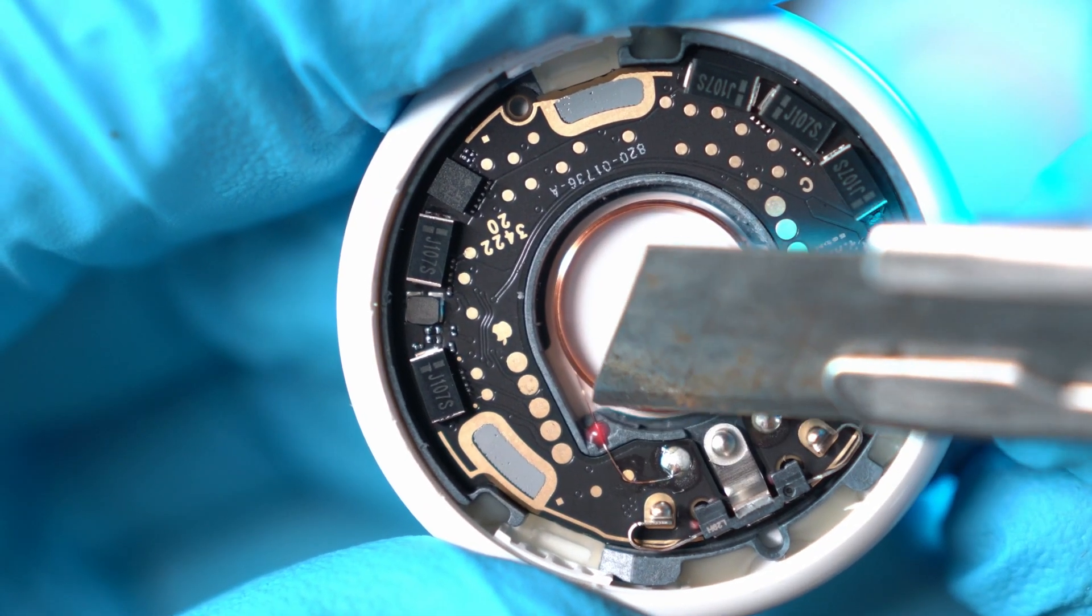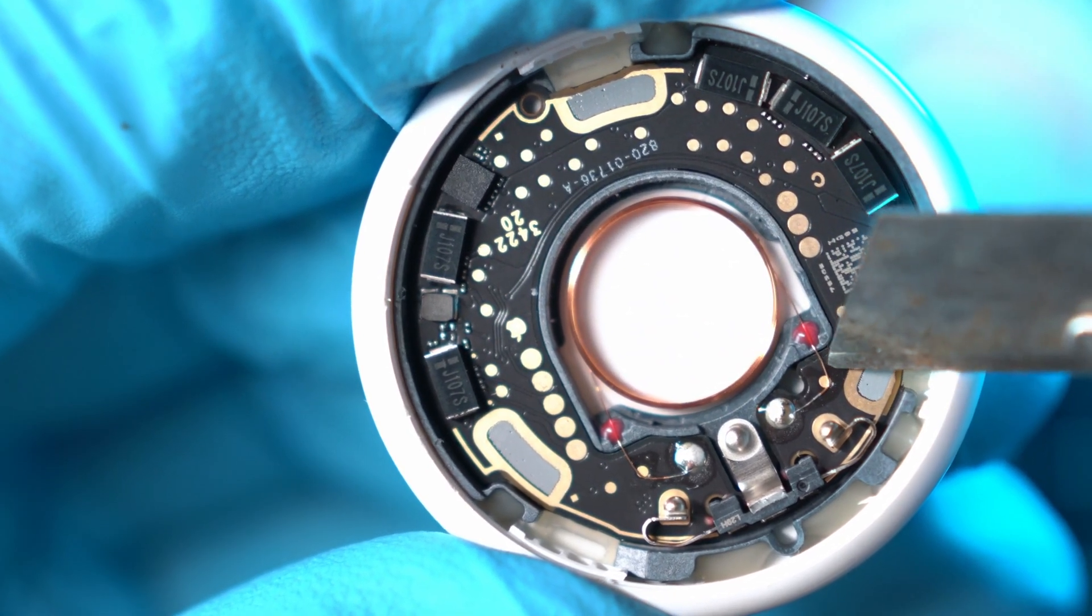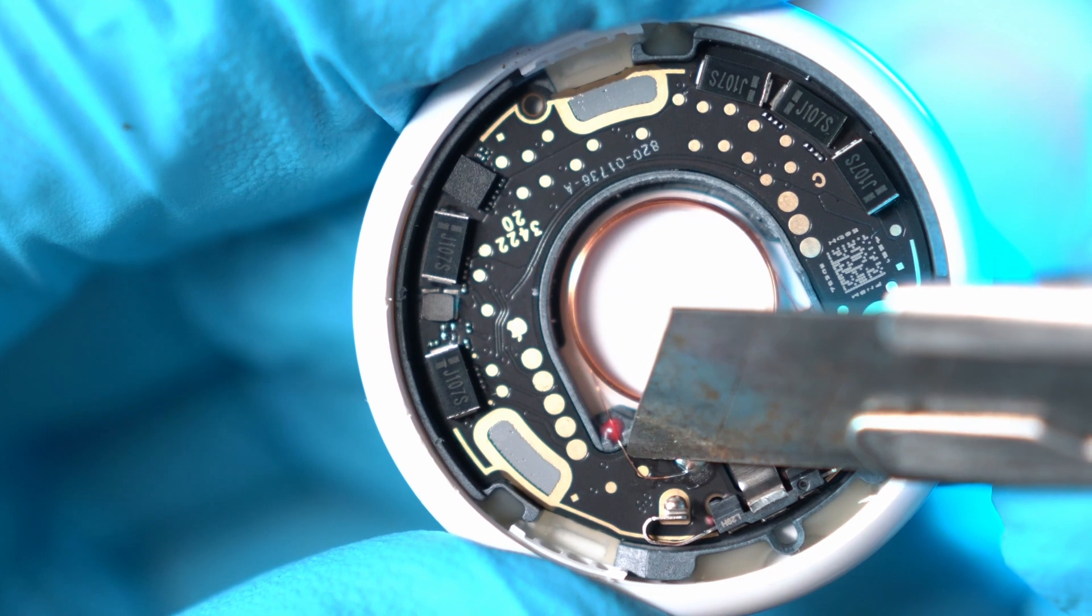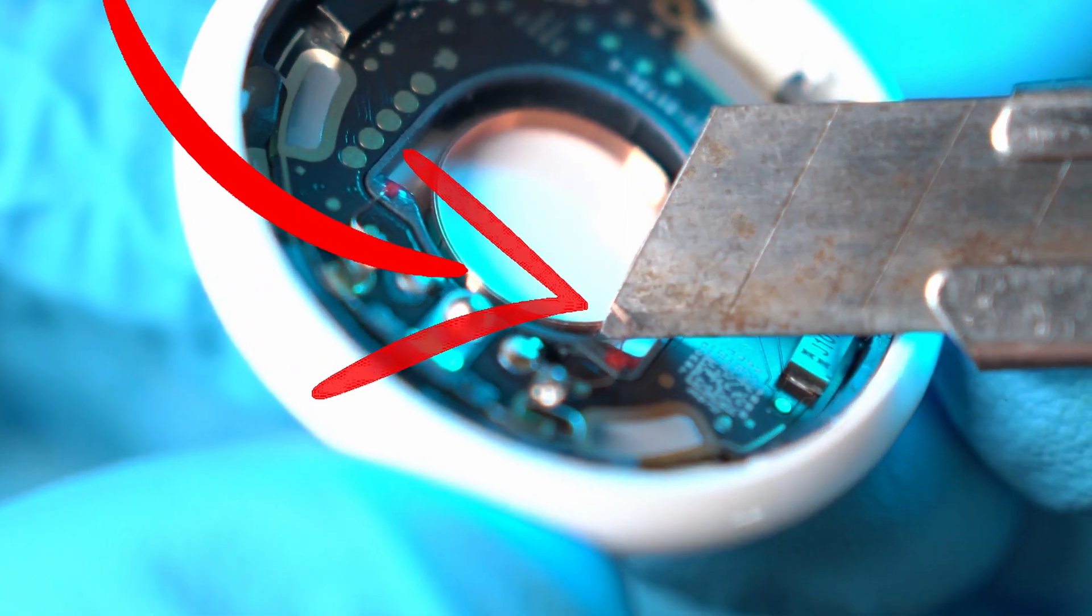Here we have a copper coil that goes around and it has two terminals, secured with two red glue dots. I'll cut the copper wire on one side, as you can see here.